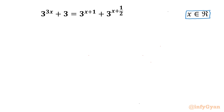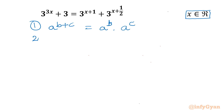Let's get started by writing two most powerful exponent laws. First: a^(b+c) can be written as a^b times a^c. Second property: (a^b)^c can be written as a^(b·c).